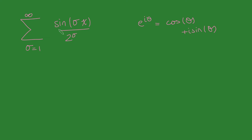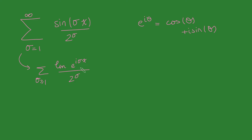In particular, sine of sigma x is simply the imaginary part of e to the i sigma x. So we can write this sum as the sum from sigma equals 1 to infinity of the imaginary part of e to the i sigma x, all over 2 to the sigma. So I've replaced sine of sigma x with the imaginary part of e to the i sigma x.